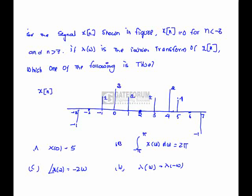For the signal x shown in the figure, the x is equal to 0 for n less than minus 3 and n greater than 7. If x is the Fourier transform of x, then which one of the following is true? The given sequence is x.